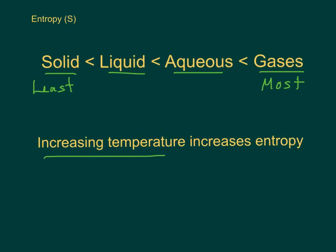And increasing temperature increases entropy. You can imagine if we heat things up and give them more kinetic energy, they tend to move around faster in a sort of more disordered state.